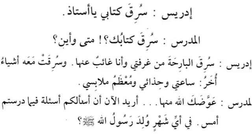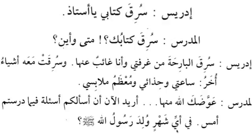Awwada - note the shaddah on the ayin kalima; it is Form 2. Ka is maf'ul bihi, Allah is the fa'il, minha gives detail. Uriidu al-an - arada yuriidu, it has maf'ul bihi as muawwal with an: uriidu an as'alakum. As'ilatan fima darastum ams - questions about what you studied yesterday. As'ilatan is the maf'ul bihi, and ma is ism mawsul; darastum is silat al-mawsul. I want to ask you questions about what you studied yesterday.